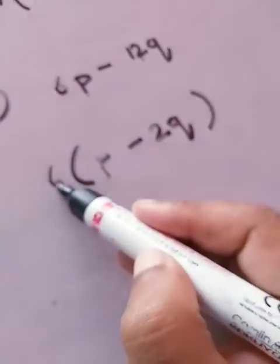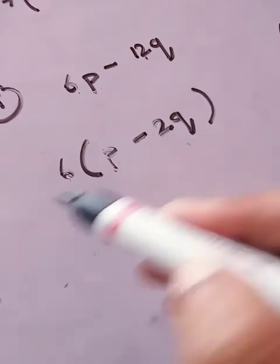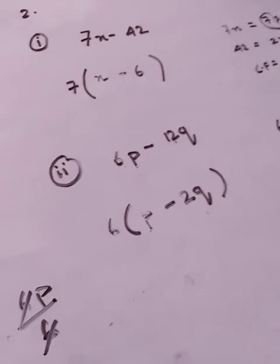That is, 6p divided by 6 - 6 will be cancelled, what will remain is p. Then you give the minus sign. Then if you divide 12 with 6, what is the answer? 2. q will remain inside. So this is how you have to do question number 2, sum number 1 and 2.